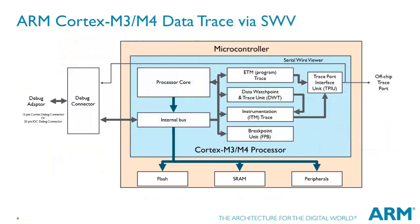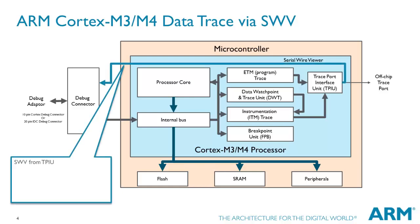There are multiple tracing options available in the Cortex-M family. The serial wire viewer from TPIU is the lowest cost solution that only uses one pin for data trace information. Typically, data is sent over this port without having to stop the process core. Facilities for a printf type of output and being able to look at memory regions while running are available.